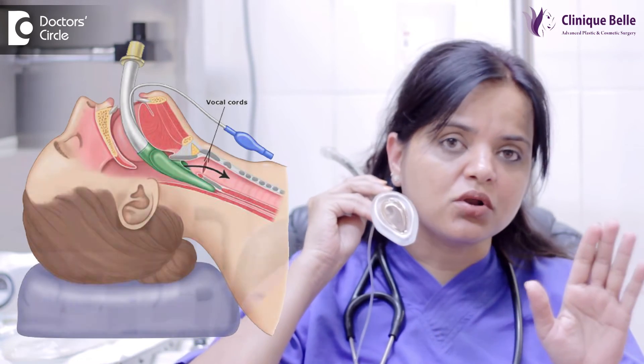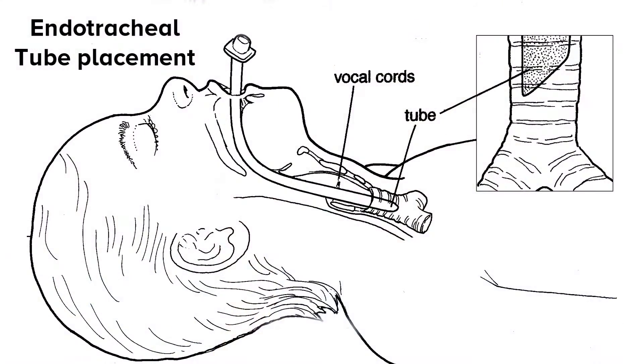It does not cross the vocal cords. An endotracheal tube is used for procedures which are of longer duration, probably more than 45 minutes to an hour, especially in surgeries where the anesthetist needs to control the ventilation of the patient. The patient needs to be paralyzed for tolerating the endotracheal tube. The big advantage of an endotracheal tube is that vomit is prevented from entering the lungs of the patient.